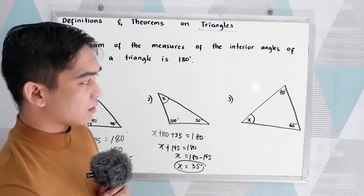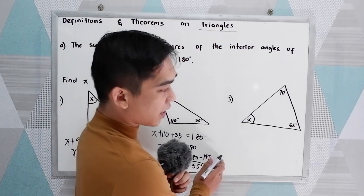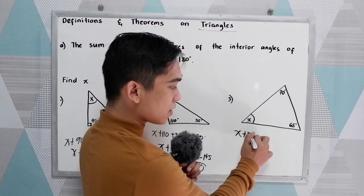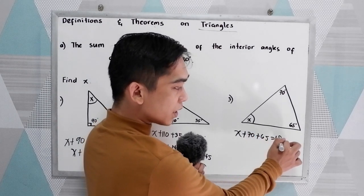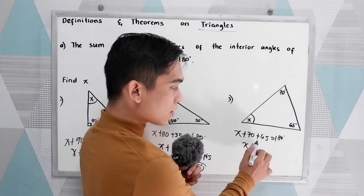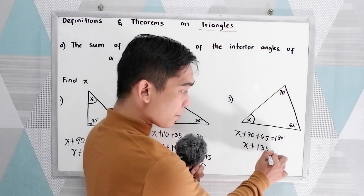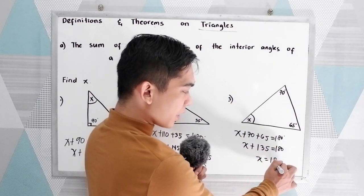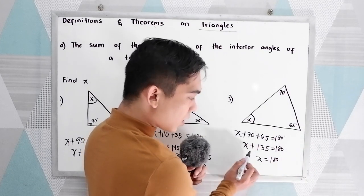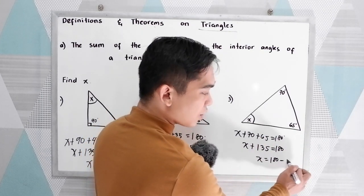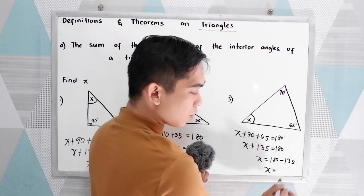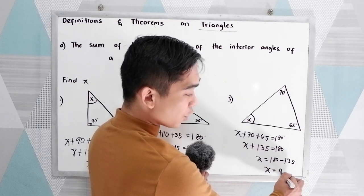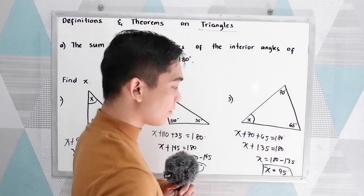Next, we have this triangle, and the given: 70, 65, and x. So, x plus 70 plus 65 is equal to 180 degrees. x plus 70 plus 65 equals 135, which is equal to 180 degrees. Using the addition property of equality, or transposing, move 135 to the right and change the sign. So, x is equal to 180 minus 135, which is 45 degrees.